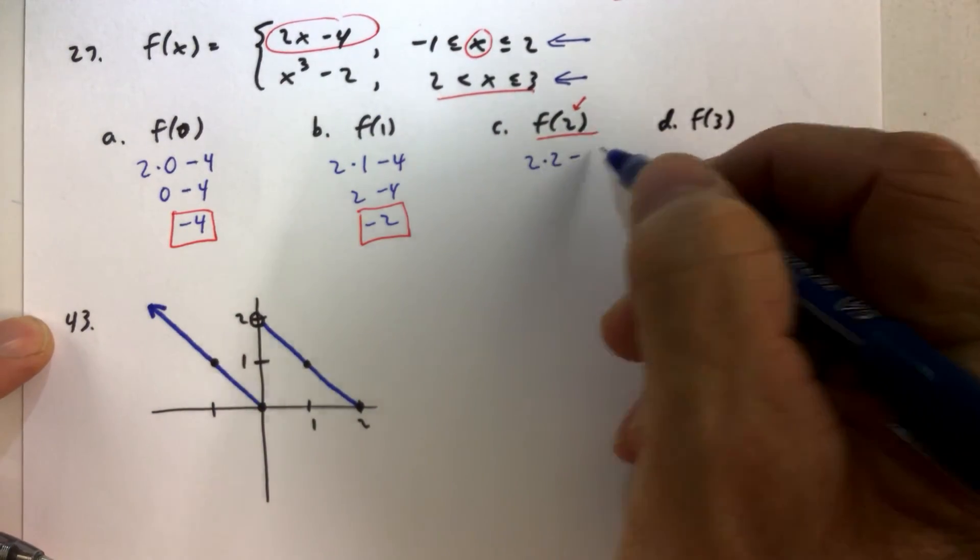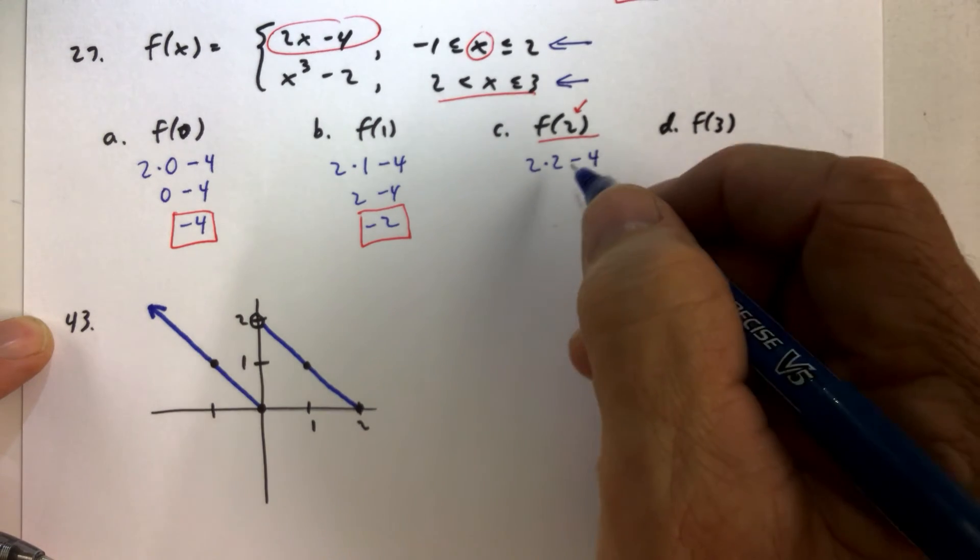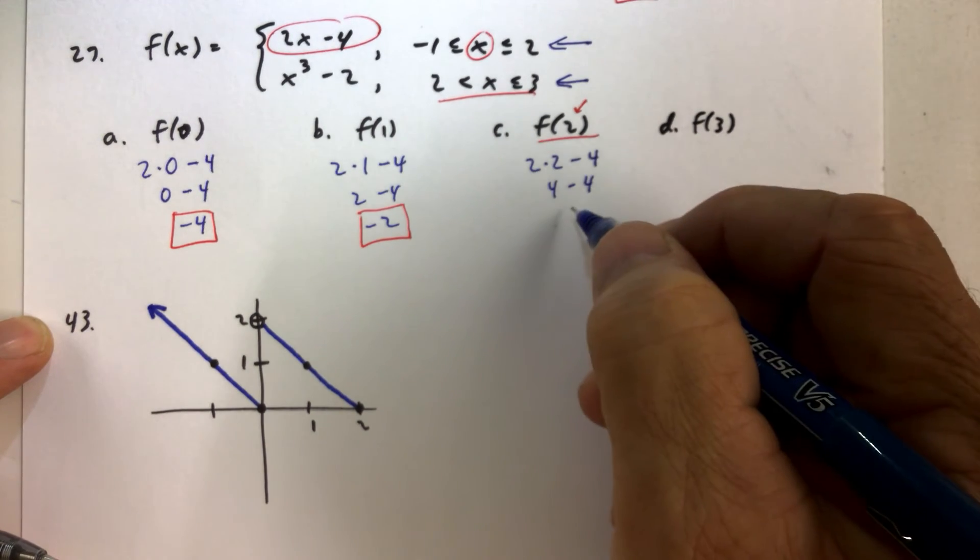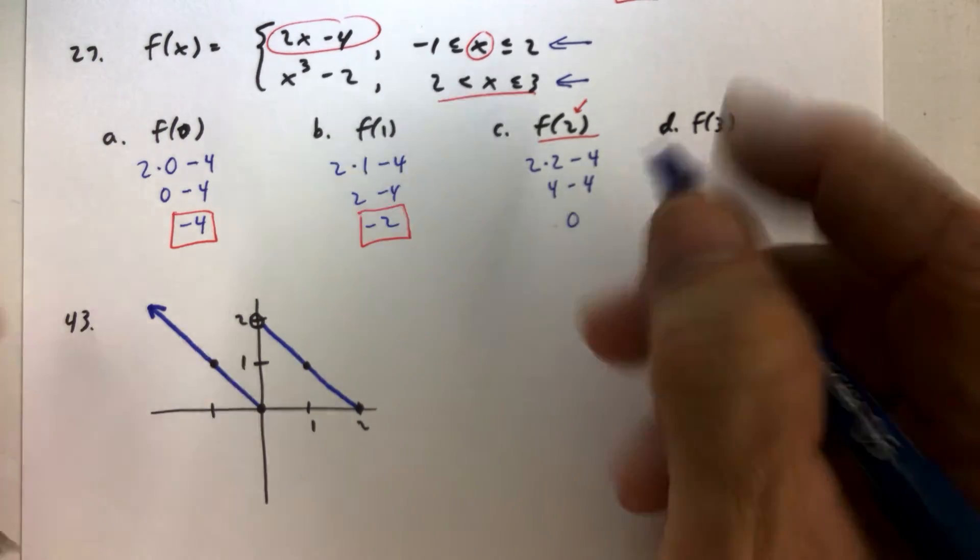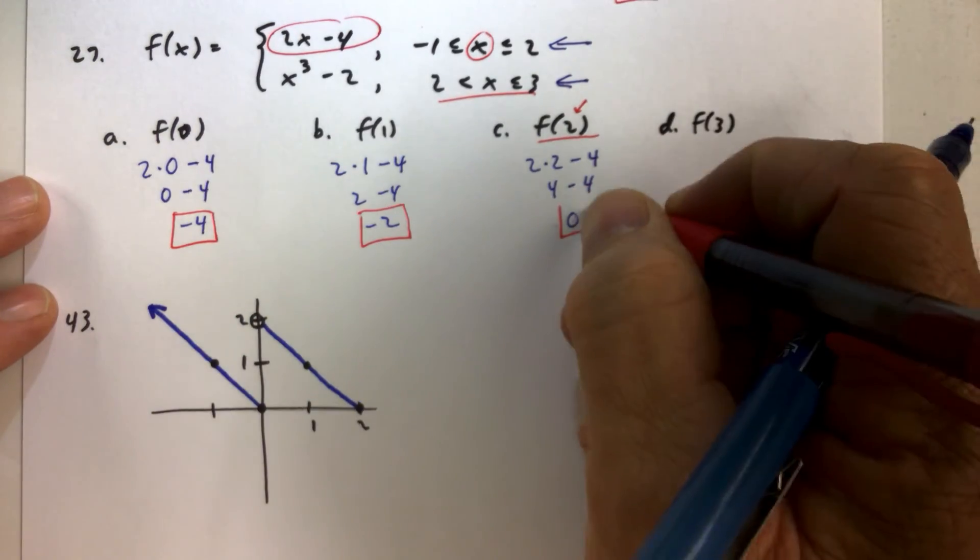So again, we replace x with 2 in the first piece. And for this piece, we get 2 times 2, which is 4. 4 minus 4, which is 0. So f of 2 is 0.